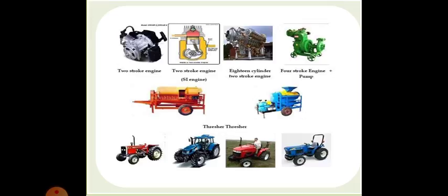The different types of engines include the two-stroke engine, 18-cylinder two-stroke engines, four-stroke engines plus pumps, threshers, and tractors of different types. All these are a part of farm powers we are using.